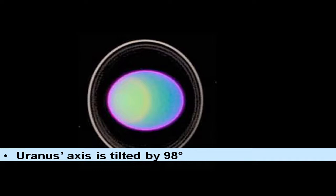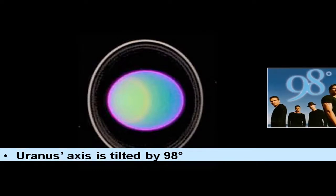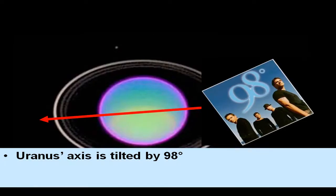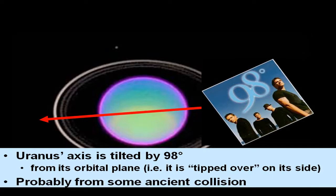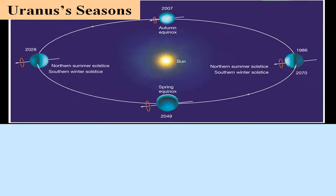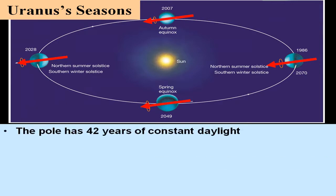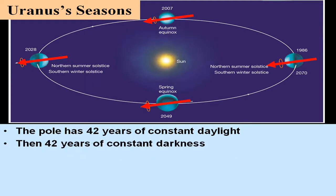Uranus' axis is tilted by 98 degrees — it's tipped over on its side, possibly from some ancient collision with another large object. In its 84-year orbit around the Sun, the pole will spend half that time facing towards the Sun and the other half facing away. So there will be 42 years of constant daylight at the pole, and then 42 years of constant darkness.